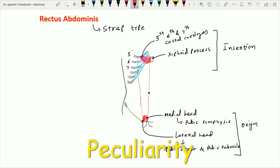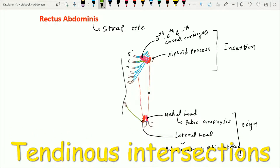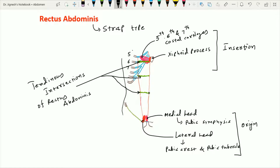A peculiarity of the rectus abdominis muscle is that it has three tendinous intersections within it. These are horizontal tendinous intersections: one is present at the level of the xiphoid process, another at the level of the umbilicus, and the third midway between these two. These tendinous intersections are attached to the anterior wall of the rectus sheath and penetrate within the anterior part of the rectus abdominis muscle only.